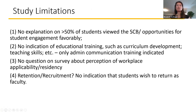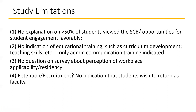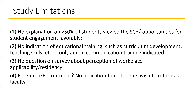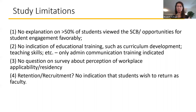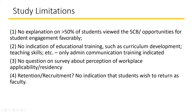Now the study limitations. I want to get back to this: 50% of students viewed the opportunities for student engagement favorably. I think that's a pretty low number — I want to know what that means. There was no indication of educational design training, though they did give communication training and conflict negotiation, which are very important. There is no question in the survey about perception of workplace applicability — in other words, can it be transferred to their career afterwards? And when students say they want to be part of academic medicine, does this mean retention and recruitment? At our medical school, students say they want to return as faculty. Does this happen here? Overall, I feel it's a big organizational structure that's in place — impressive numbers of students, and it's been going on since 2012, so there's a nice collaboration and continuity.